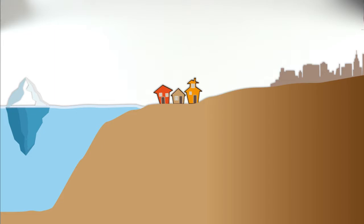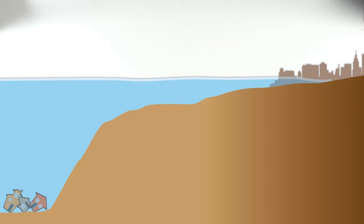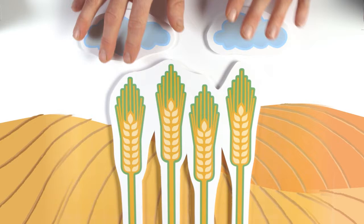Sea level rise means that people who live in coastal areas will be hit more often by flooding, and some places will disappear entirely. Changes in precipitation due to a warming climate will impact agriculture and food production.